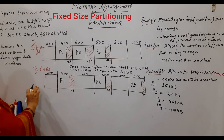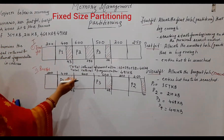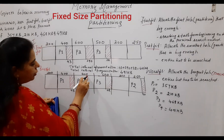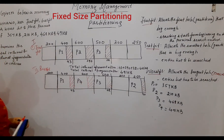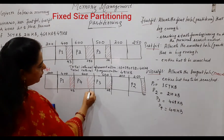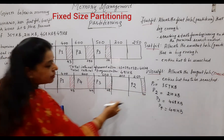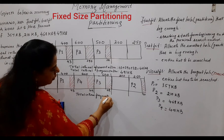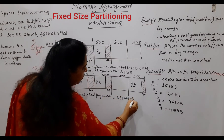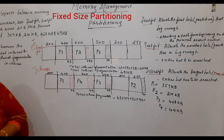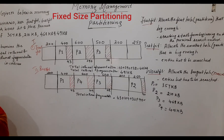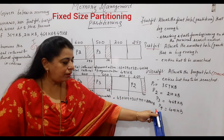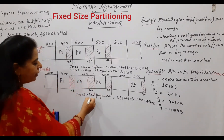For P4 at 491 KB, the best fit is the 600 KB partition. P4 is placed there with a leftover of 600 minus 491 equals 109 KB. So total internal fragmentation for best fit is 43 plus 109 plus 32 plus 40 equals 224 KB. Since all four processes are accommodated, there is no external fragmentation — external fragmentation is nil.